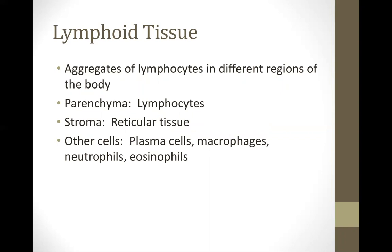Generally speaking, when we say lymphoid tissue, these are aggregates of lymphocytes in different regions in the body. If it is just a portion of a particular organ, it is called lymphoid tissue. But if that specific organ has so many lymphocytes, that is what we call a lymphoid organ or lymphatic organ. The parenchyma of the lymphoid tissue is lymphocytes; the stroma is reticular tissue, which is type 3 collagen.